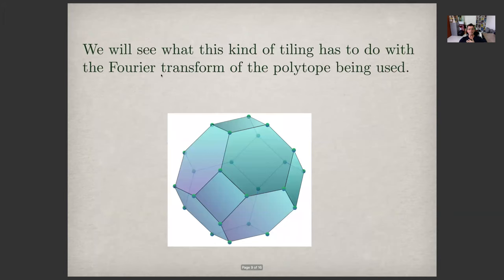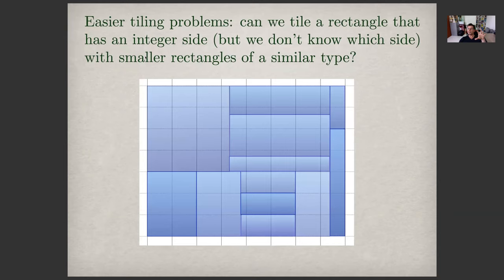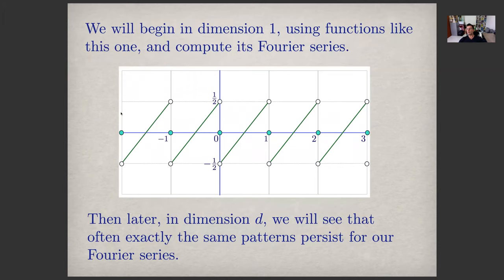Here's one of them. And we will start with easier problems in two dimensions, one dimension in two dimensions. This is a problem, for example, of tiling one rectangle with smaller rectangles of a particular type. Fourier methods work very well, and they reduce the problem to a very simple condition, which we will derive.